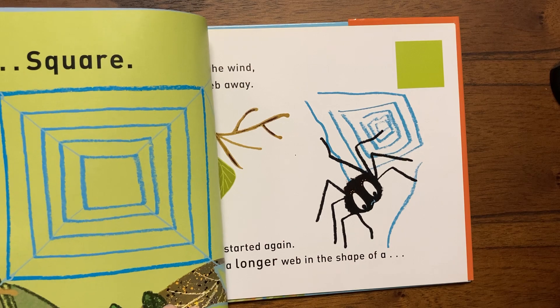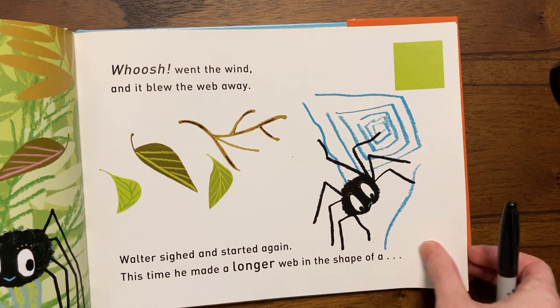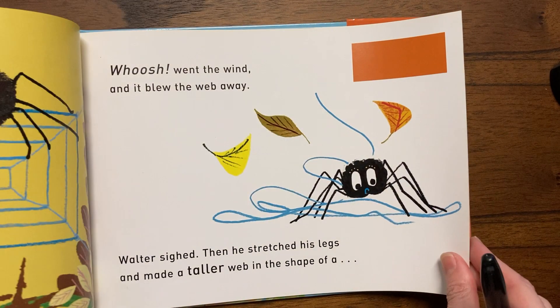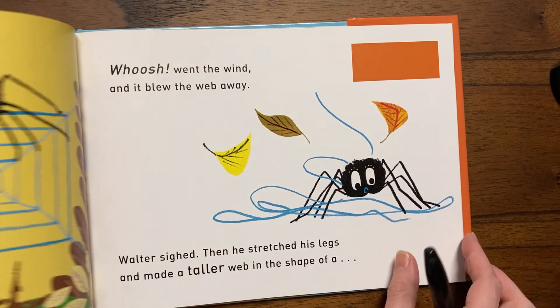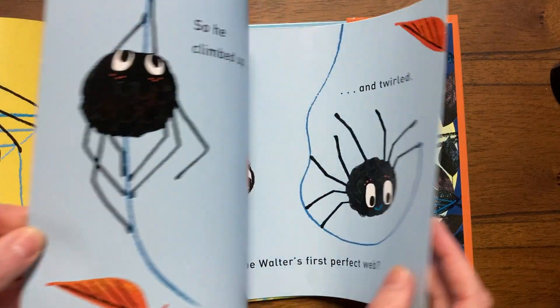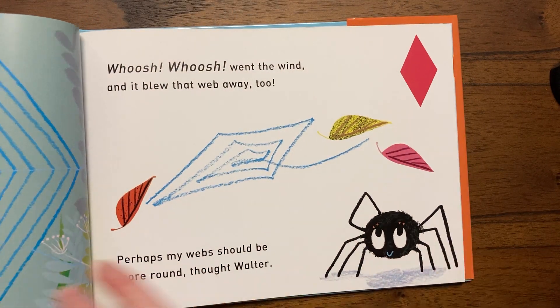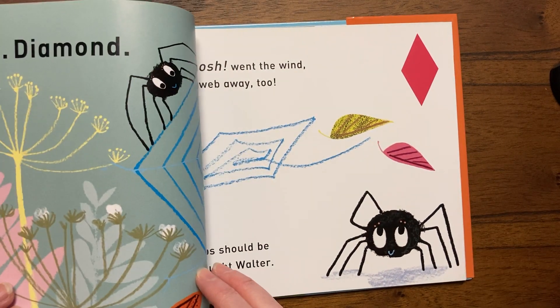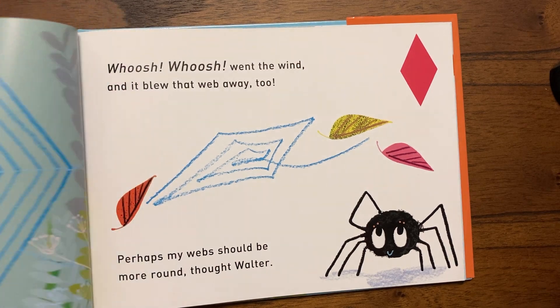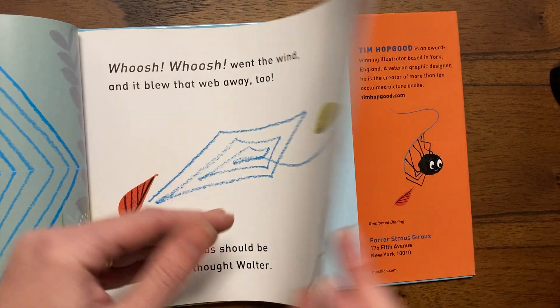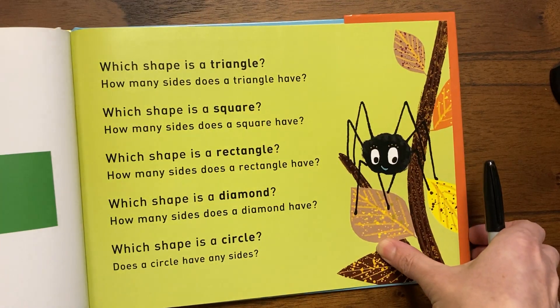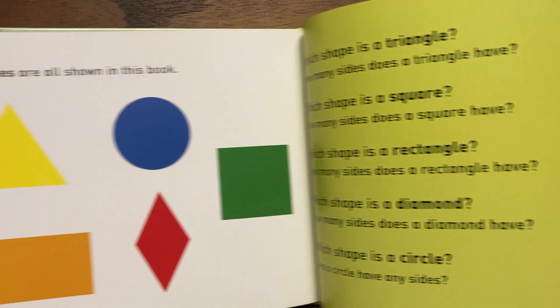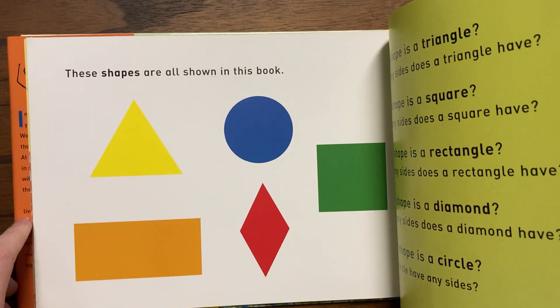For example, a square web, a rectangle web, even a diamond web. So some shapes that we're going to think about a little closer today are going to be the shapes that Walter talks about at the end of the story.